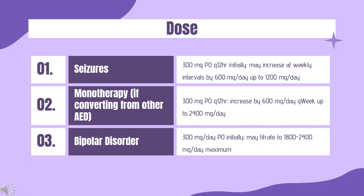Dose – Partial Seizures, Adjunctive Treatment: Trileptal: 300 mg PO Q12HR initially, may increase at weekly intervals by 600 mg per day up to 1,200 mg per day. Oxtellar XR: 600 mg once daily initially, may increase at weekly intervals by 600 mg per day to a target dosage range of 1,200 to 2,400 mg per day. Monotherapy when converting from other AEDs: Initial dose 300 mg PO Q12HR, increase by 600 mg per day per week up to 2,400 mg per day. Reduce and withdraw concomitant antiepileptic drugs over 3 to 6 weeks while reaching maximum oxcarbazepine dose in 2 to 4 weeks.